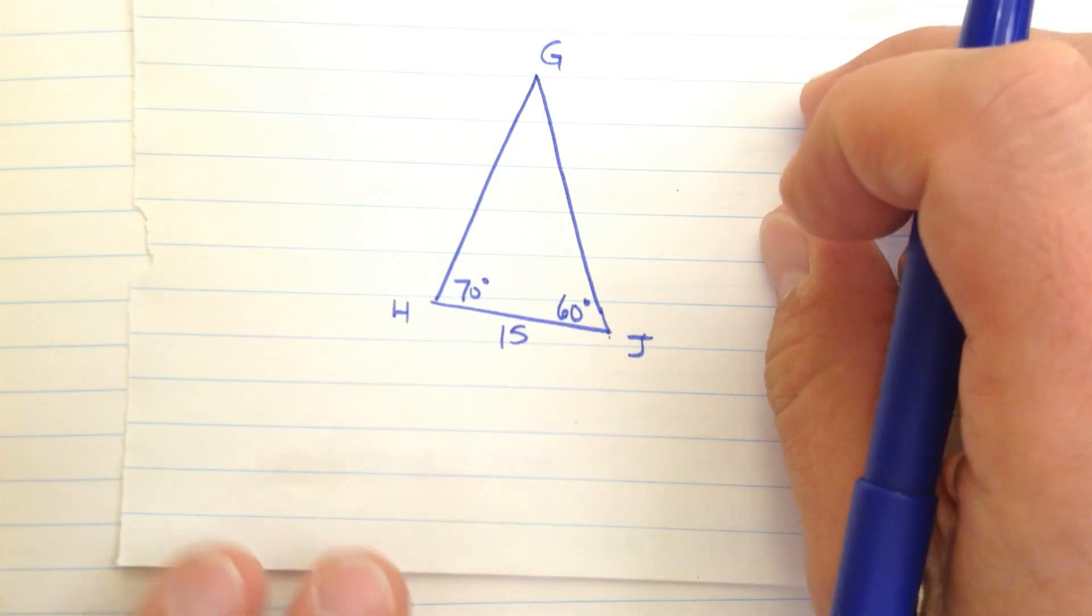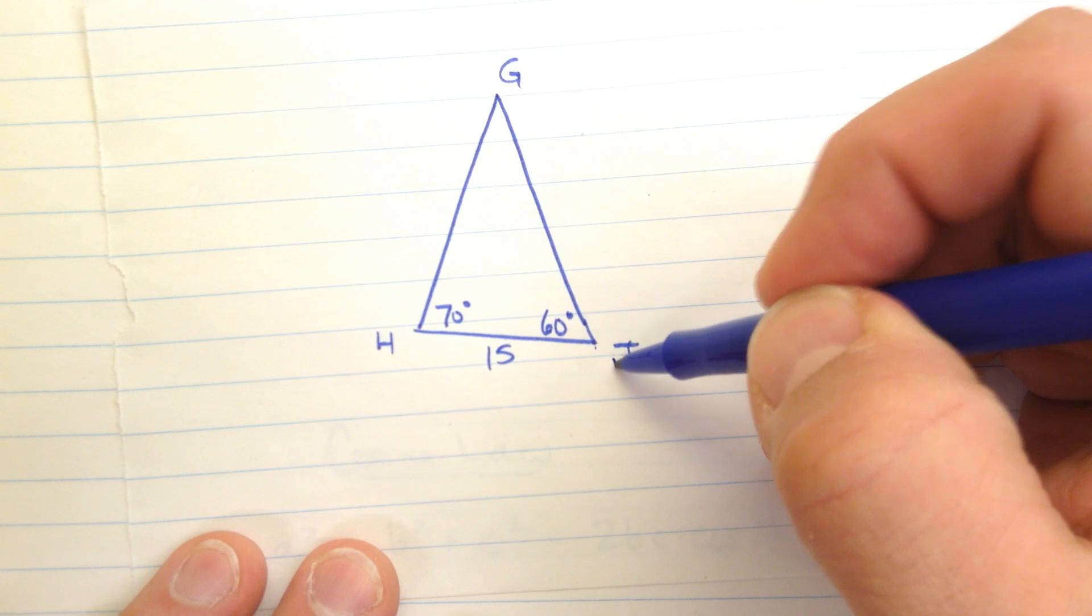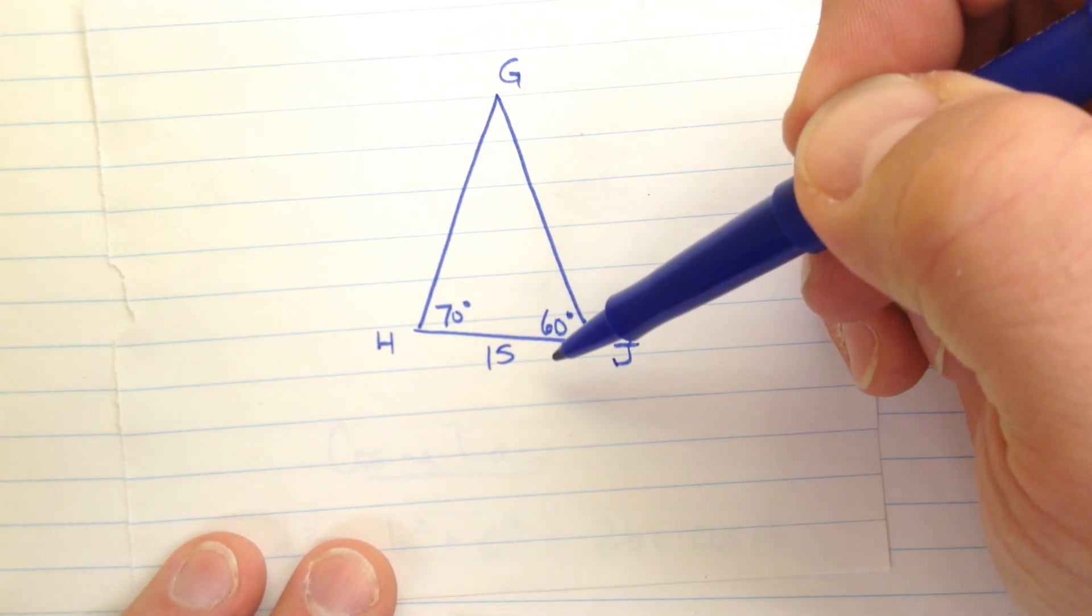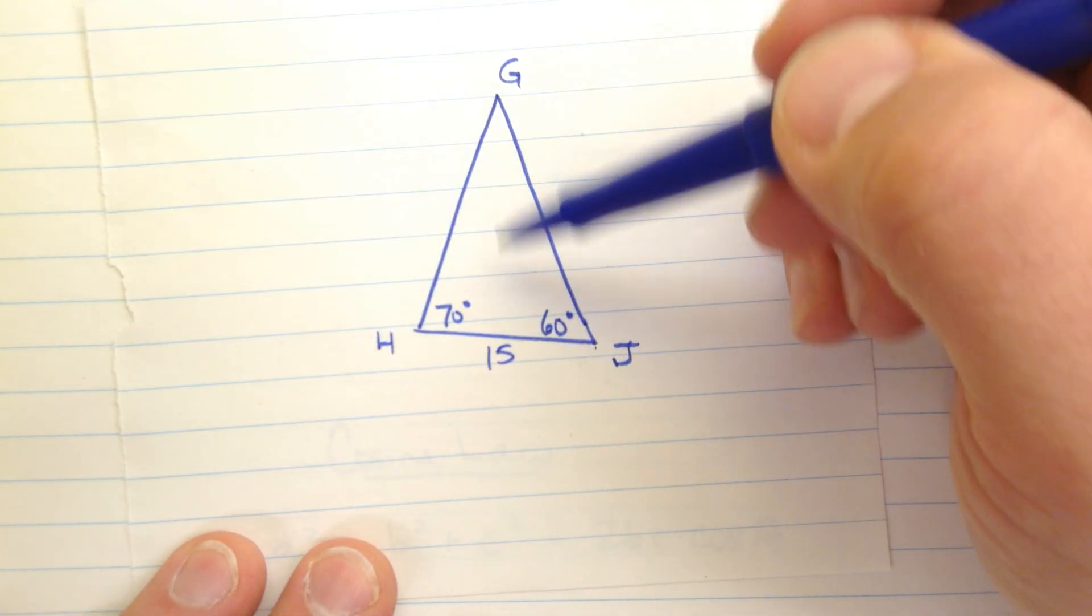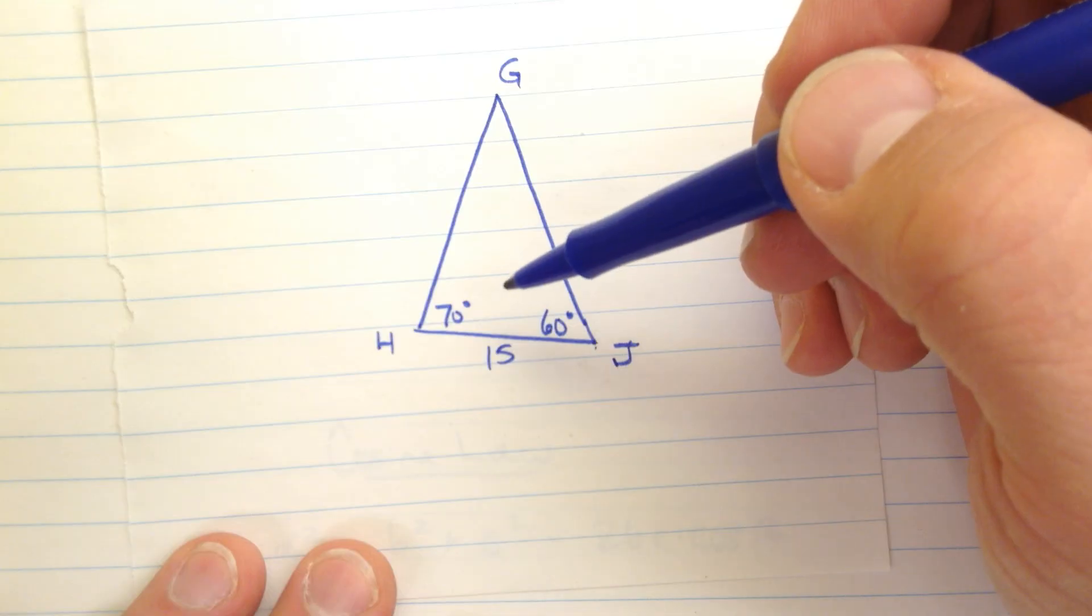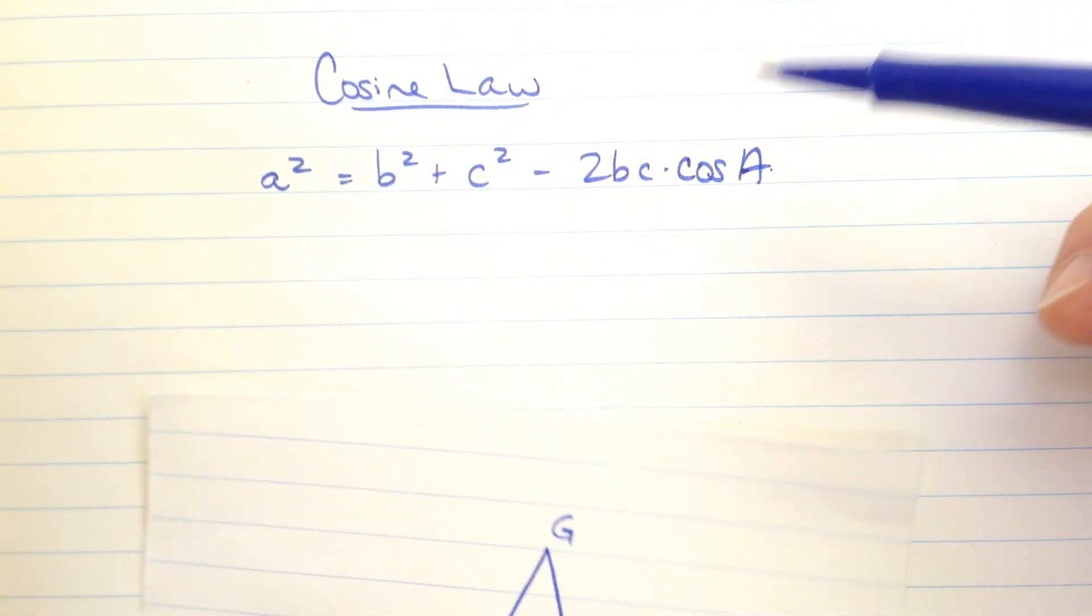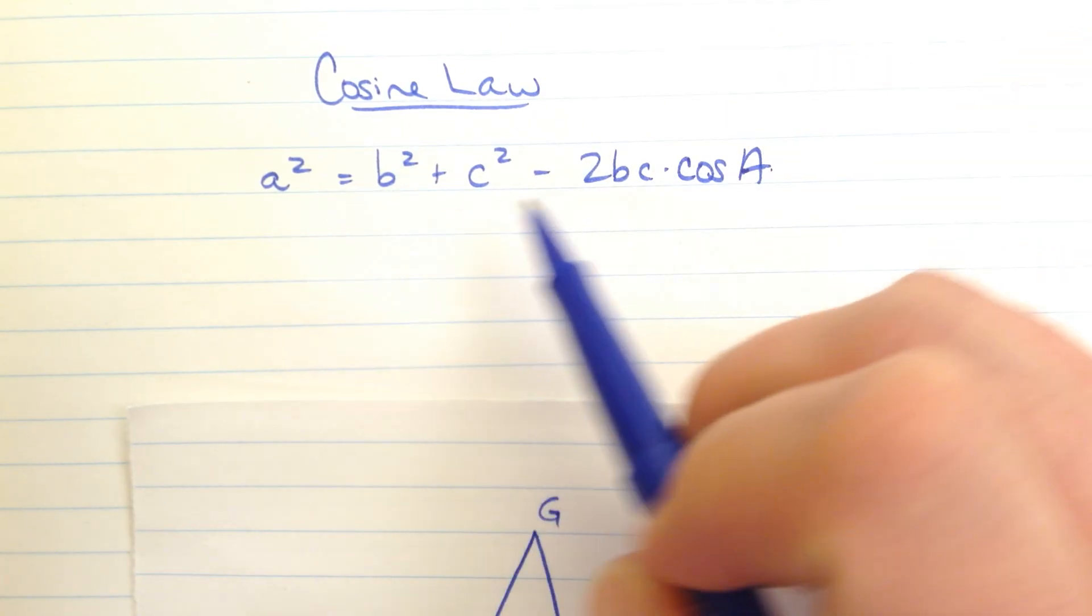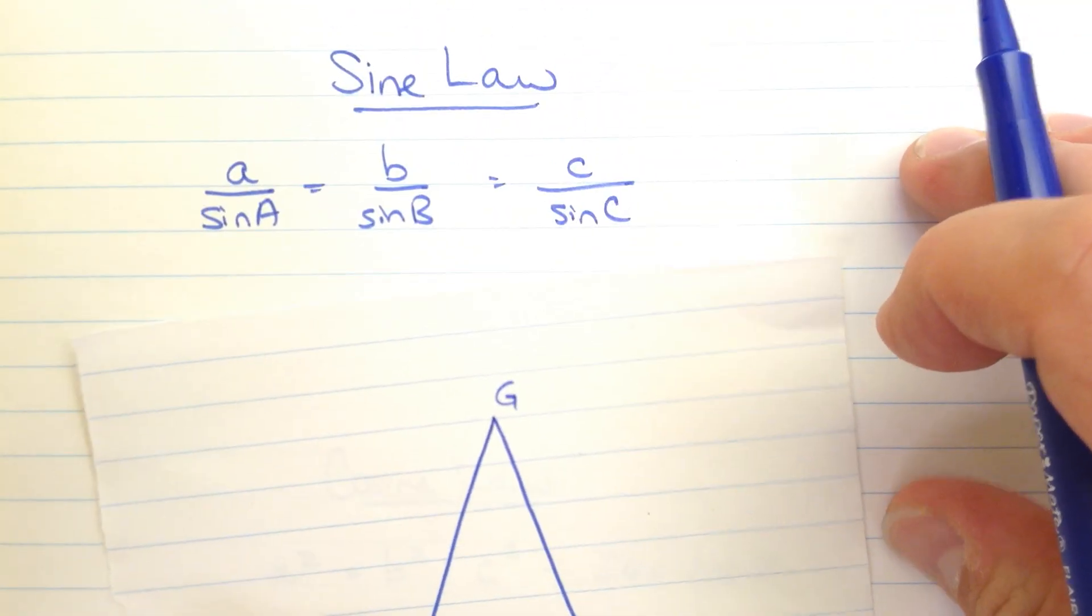How about this guy? Triangle GHJ. I avoided the I because it looks like a 1. I have two angles and I have a side. Well let's see here. I can't really use cosine law here because I have two angles and only one side. The cosine law only involves a single angle and I have to at least know two of the three sides to be able to use it. So that's no good. But I can use the sine law right?